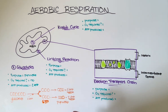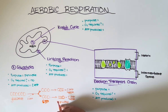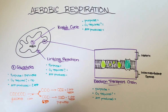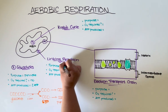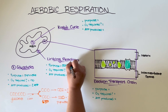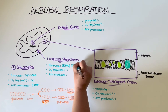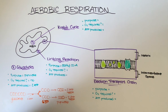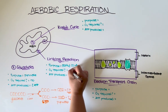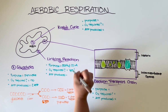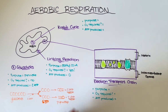Once pyruvate is created it can move into the intermembrane space of the mitochondria. Before it can enter the matrix it needs to undergo a small modification to create a molecule called acetyl coenzyme A, and that is the main purpose of this linking reaction. This reaction does require oxygen and it does not make any ATPs.